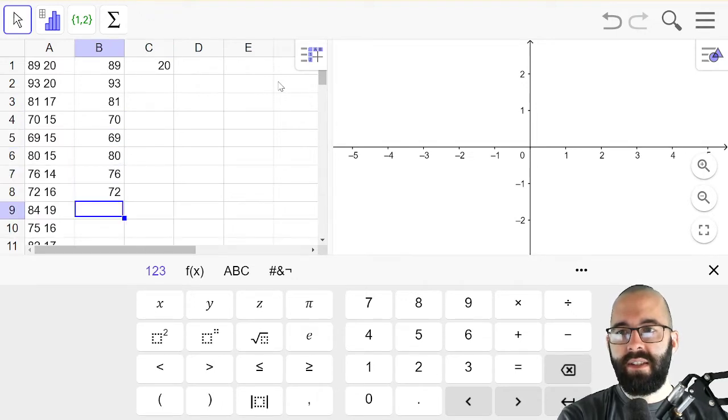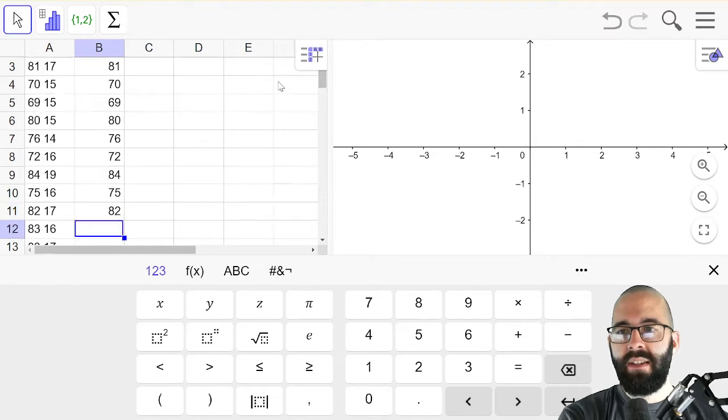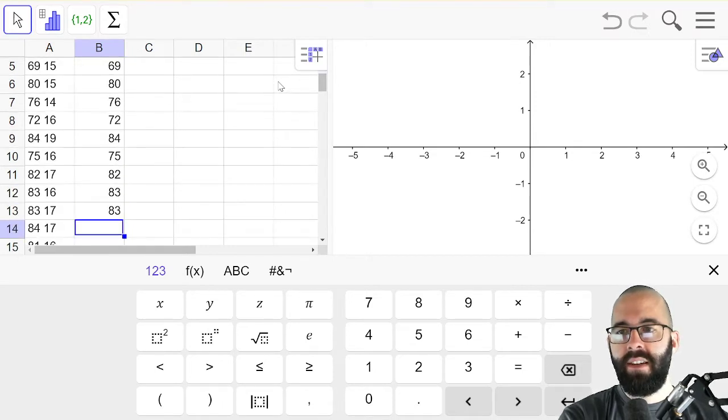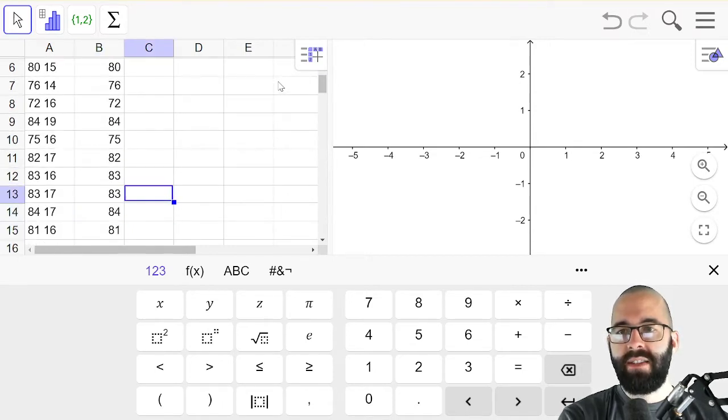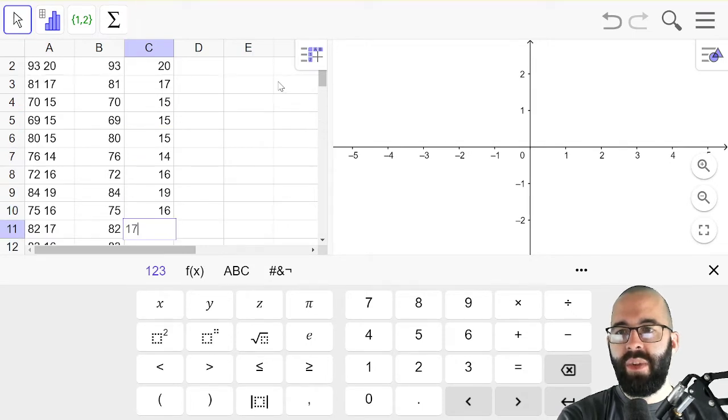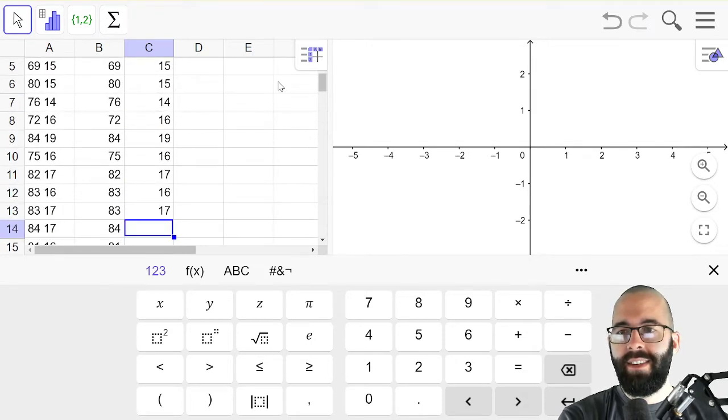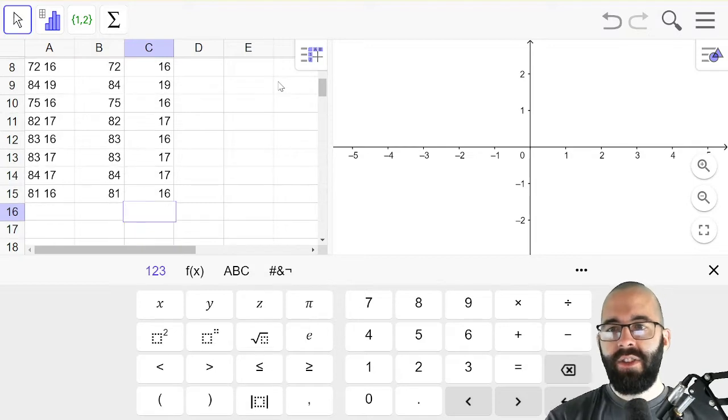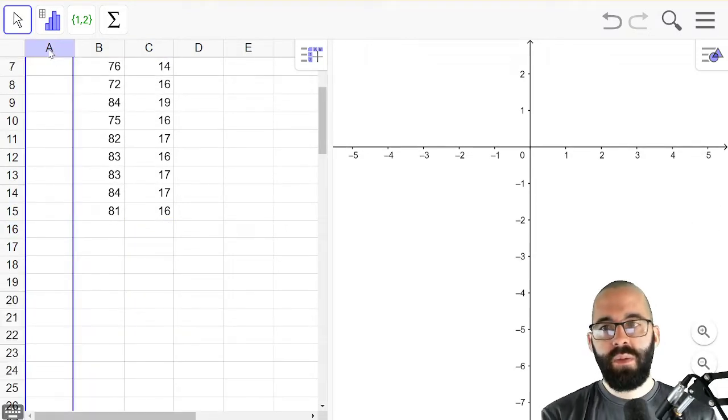80, 76, get some good number pad 10 key practice. I was always bad at that. My mom had us take typing classes and I was pretty good at normal typing but I was never really good with the number pad. I'm getting a little bit better. All right, so you should have data in two columns.